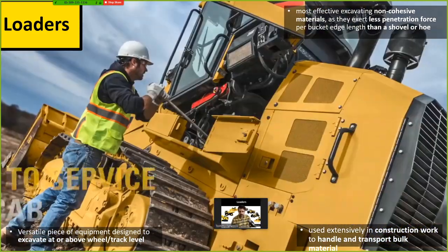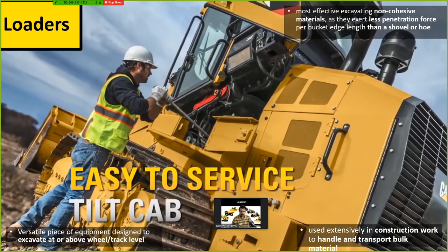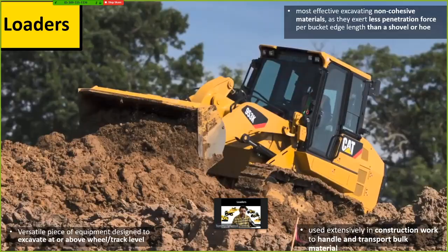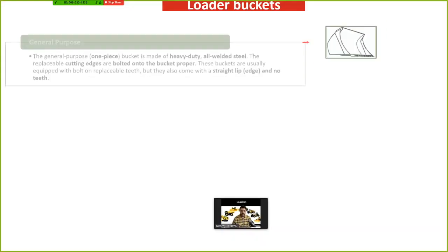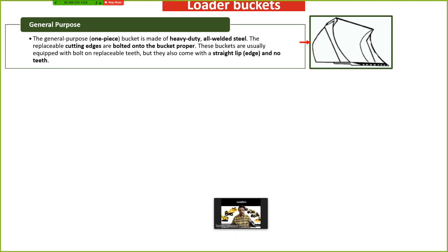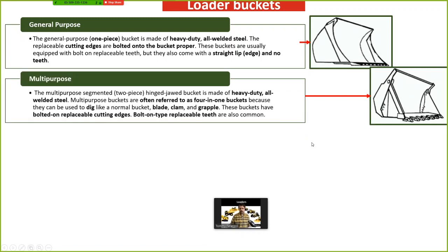Loaders are extensively used in construction work to handle and transport bulk materials. There are different types of buckets for a loader. The first is a general purpose or one-piece bucket — it's a heavy-duty all-welded steel design. The cutting edge depreciates faster than any other part of the bucket, so it needs to be replaceable. There are no teeth; it's just a straight lip edge.